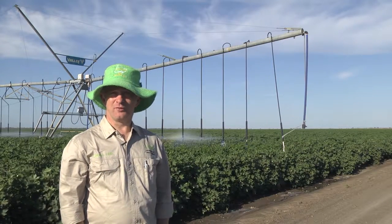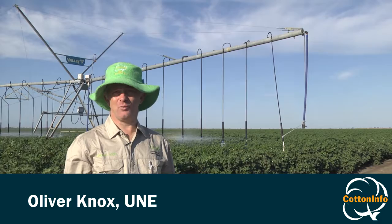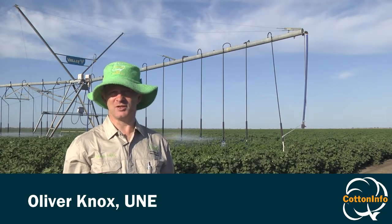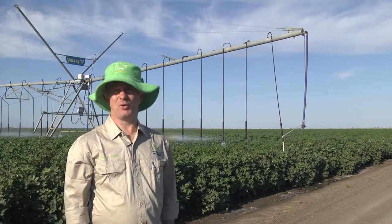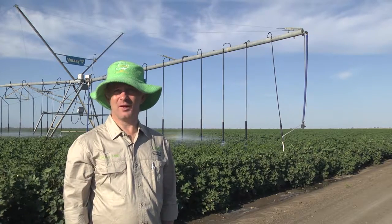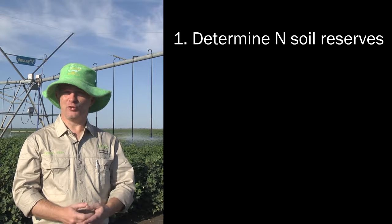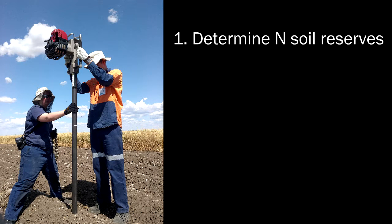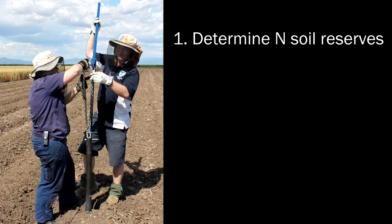One of the challenges with nitrogen use is that if we overuse it, we're putting money into the ground that we're not going to see back in our crop. If cotton growing is about profitability, why spend money you won't see returned? First up, do your soil tests — actually know what's in the soil, know what that nitrate level is, and have an expectation of what the crop will see from that reserve, if any.